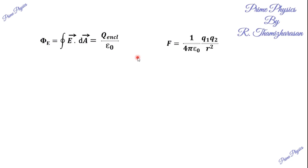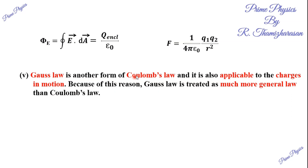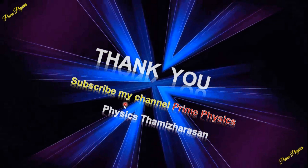Gauss's law is another form of Coulomb's law. The equation of Gauss's law and Coulomb's law are related in magnitude. It is also applicable to charges in motion — that is explained in higher studies. Gauss's law is treated as a much more general law than Coulomb's law, so we use Gauss's law as the general law.